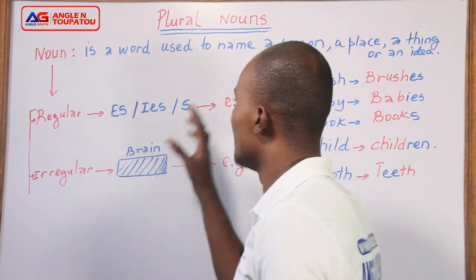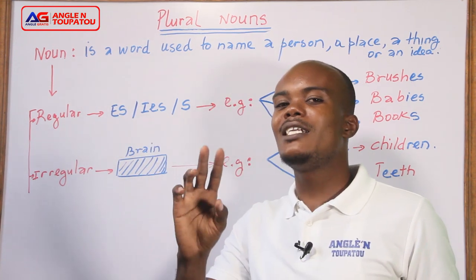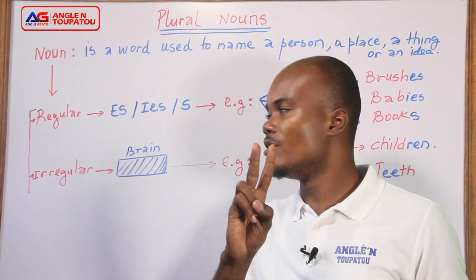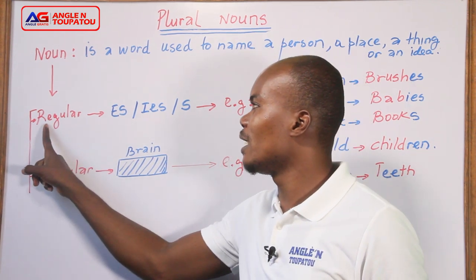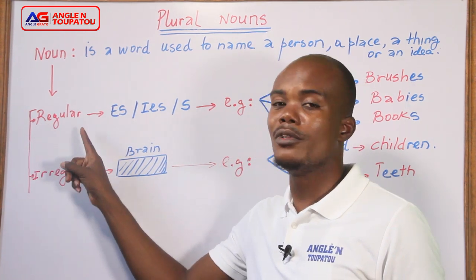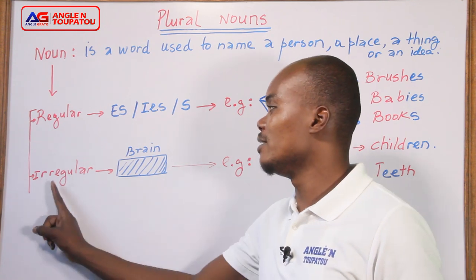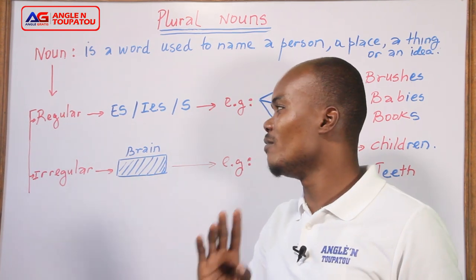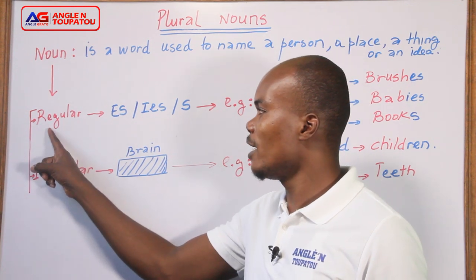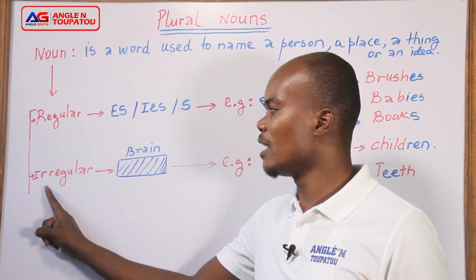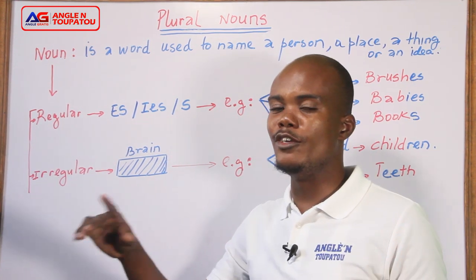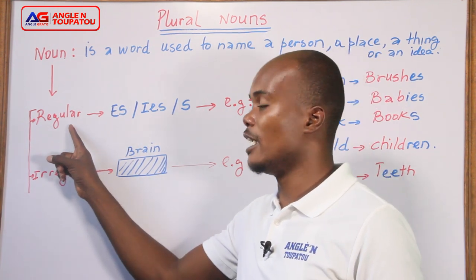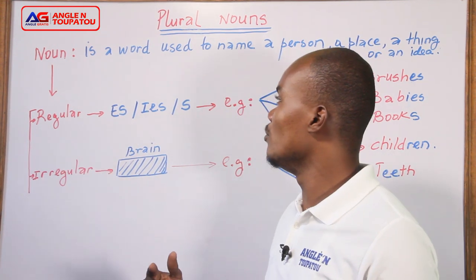But let me tell you, nouns are divided into two. Non yon divisa en deux. There is regular plural nouns and there is irregular plural nouns. Sa sa vle di, gen pluriel regulye, gen pluriel irregulye. Nan non yon, lo a forme pluriel yon, gen yon ki regulye et gen yon ki irregulye.